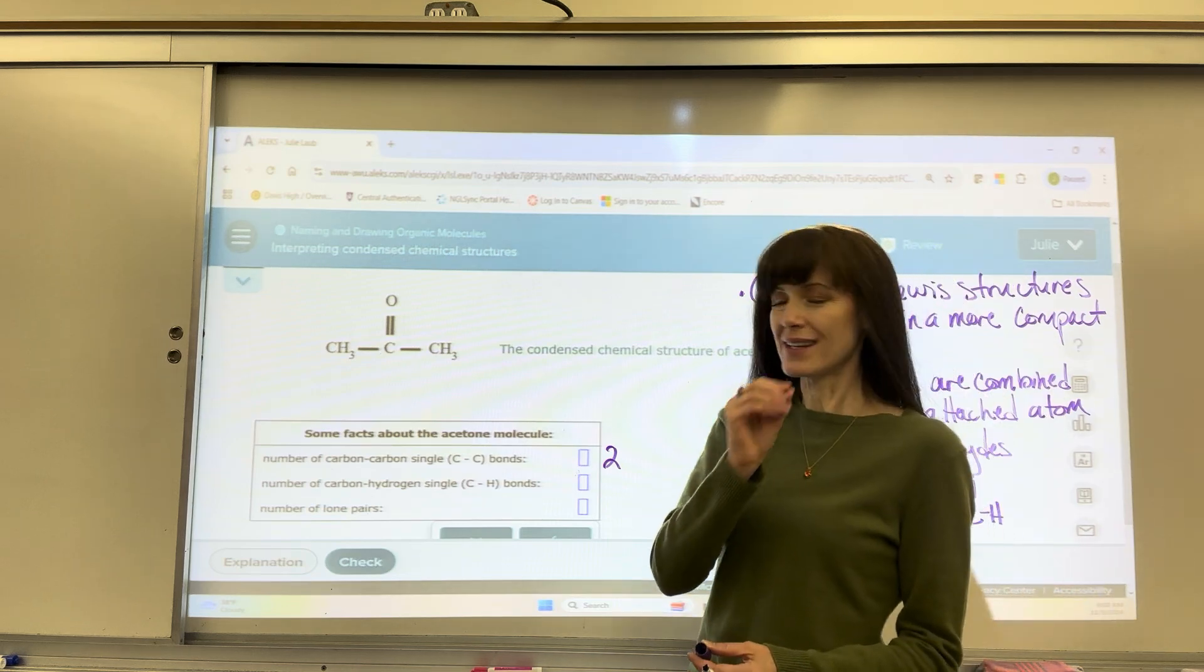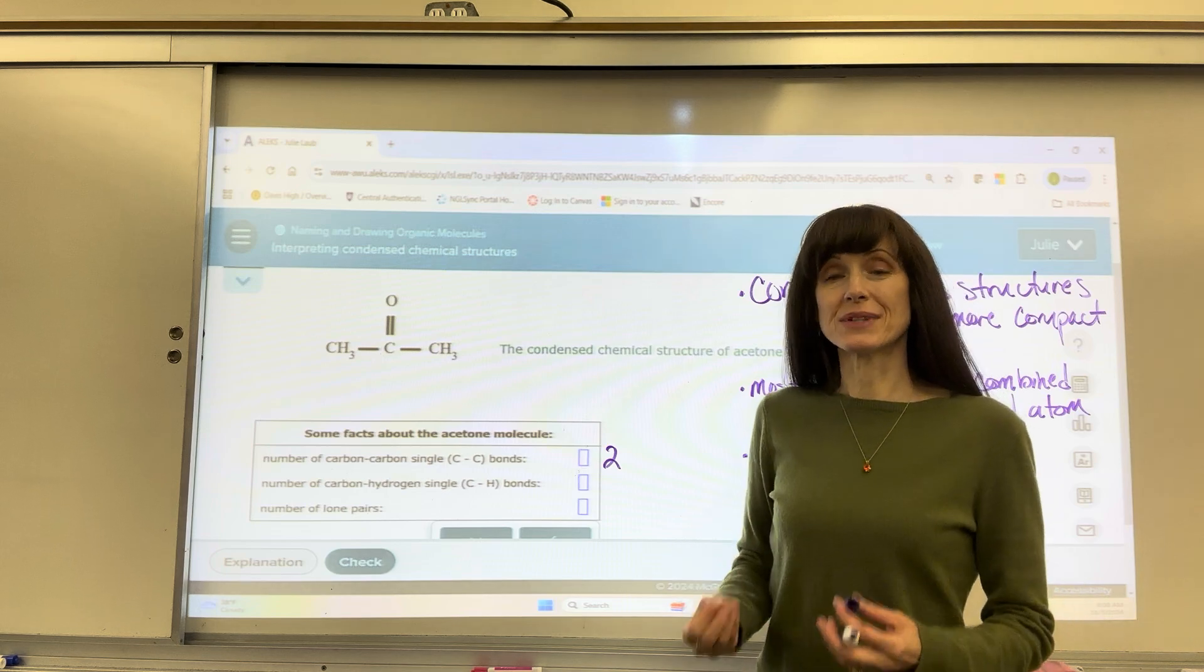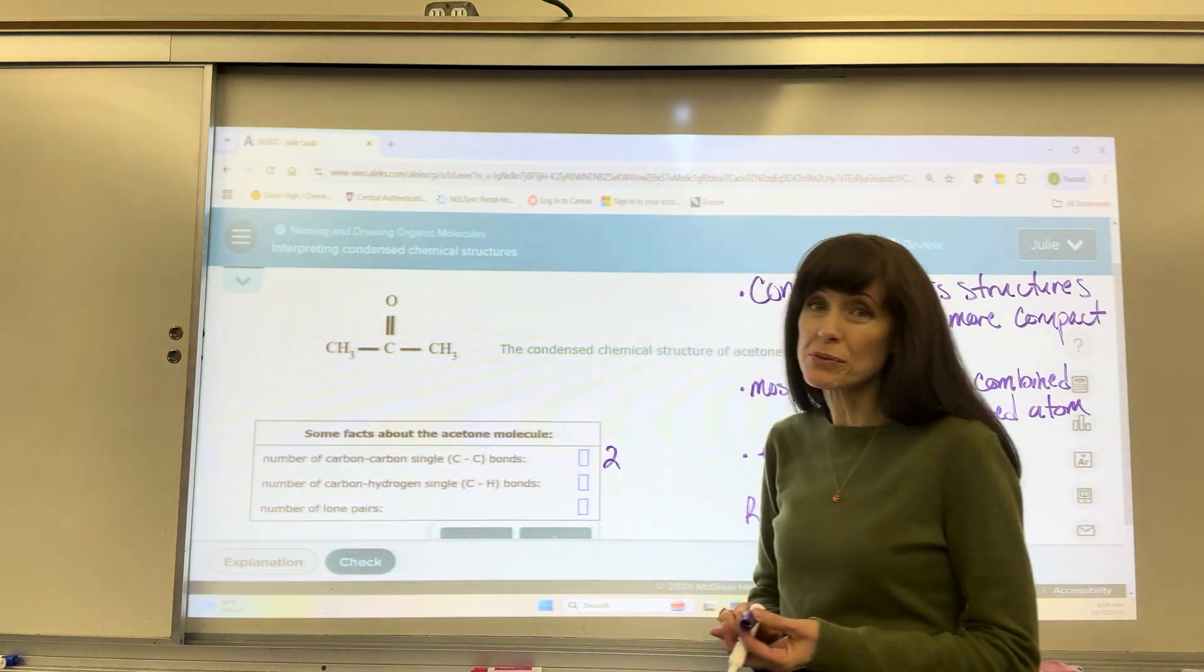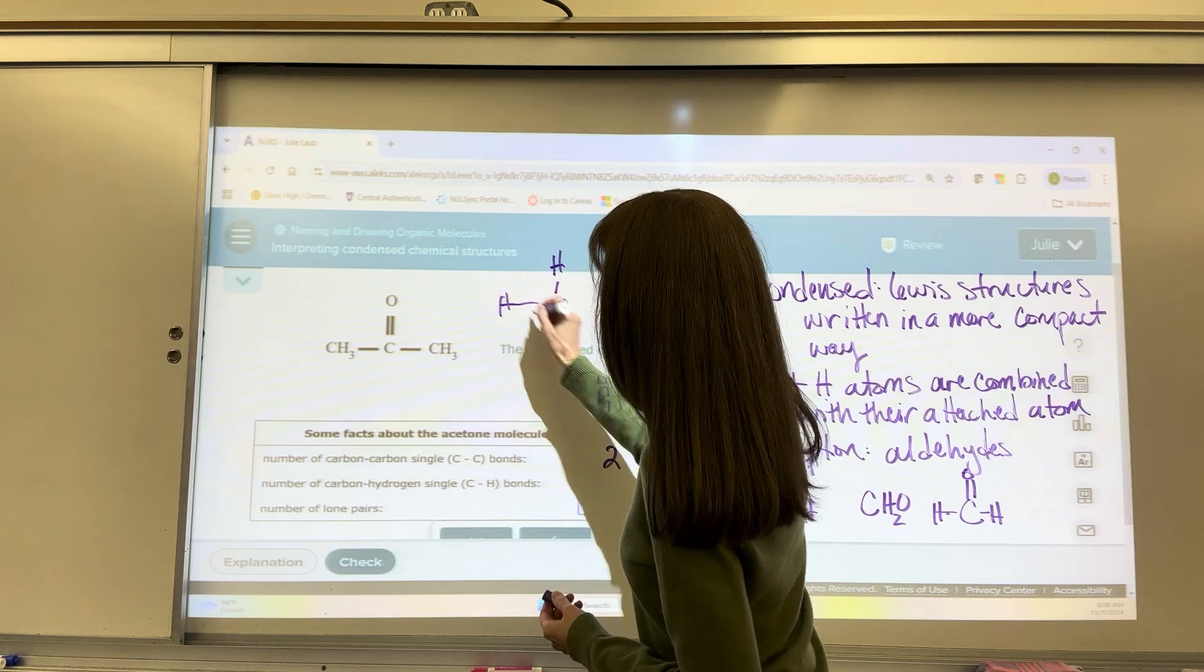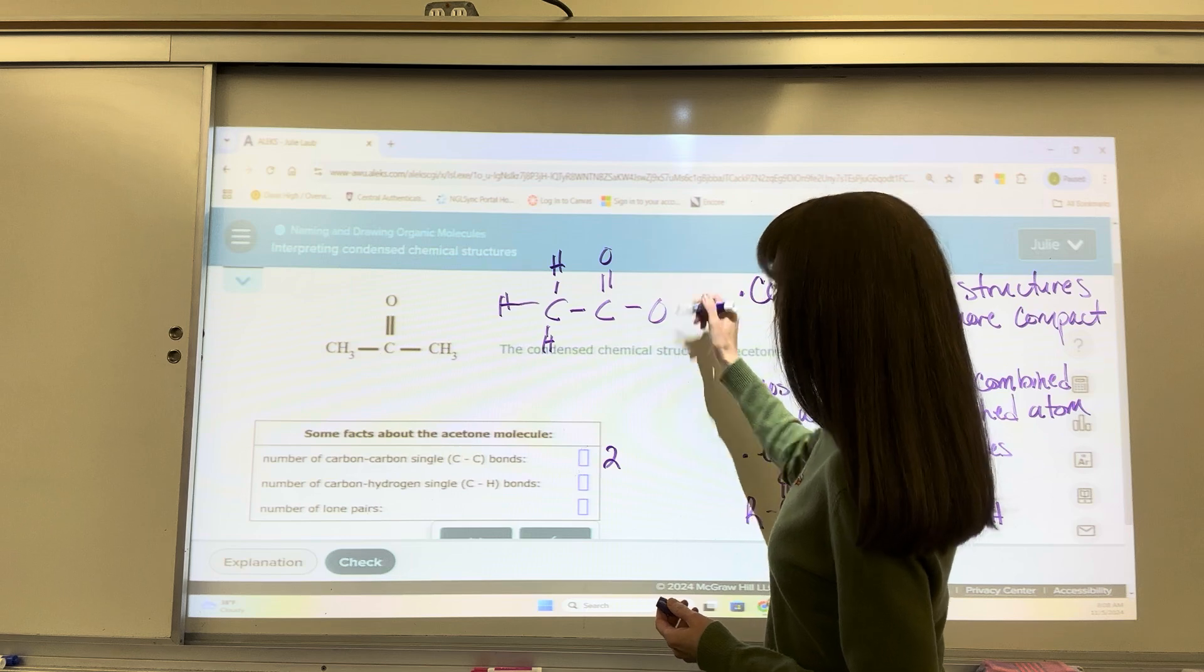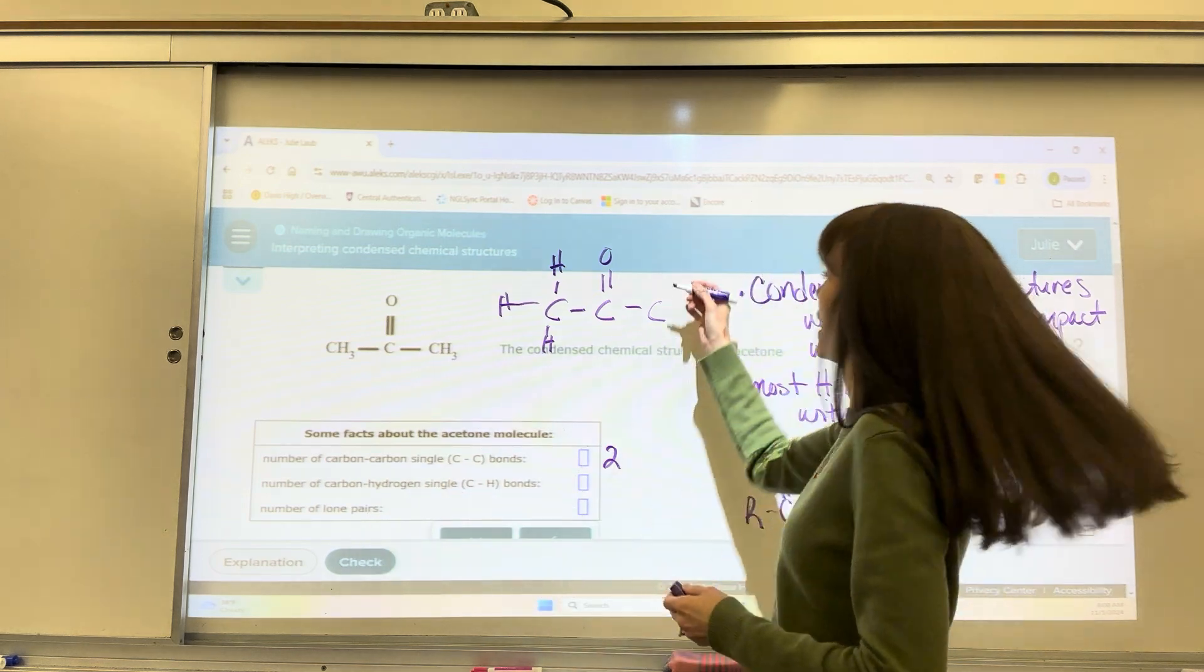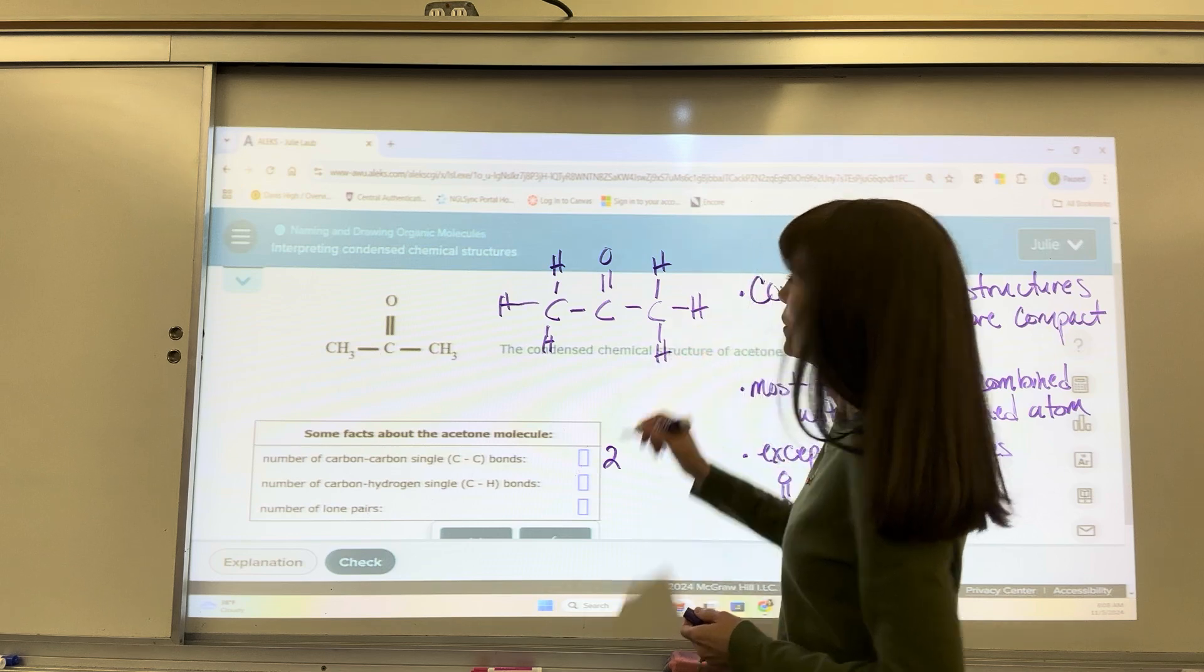Next, this is the number of carbon-hydrogen single bonds. This is written as a condensed structure. Those three hydrogens are actually all single bonded to the carbon. If I were to write this out, it would be carbon with the three hydrogens like this, then my carbon-carbon bond double bonded to oxygen, and then a single bond to carbon, that's CH3. Another three bonds to hydrogens.